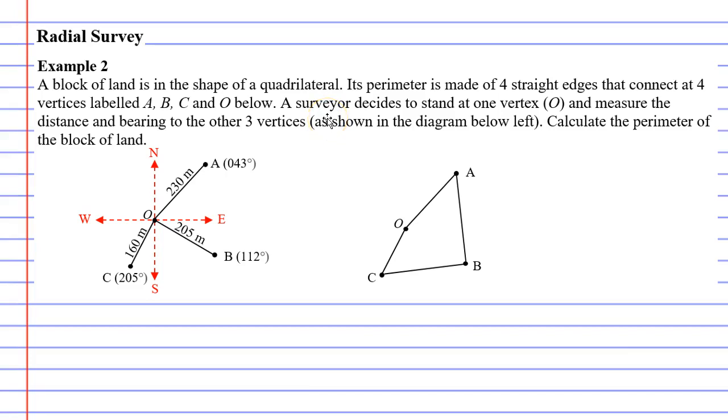Now a surveyor decides to stand at one vertex O. If we look on the right side, these are basically the same diagrams. The one on the left shows what the surveyor has measured. The surveyor stood here and measured the distance and bearing to the other three vertices. The surveyor measured the bearing from O to B at 112 degrees at a distance of 205 meters. They measured another distance to A which was 230 meters with the bearing there as well, and then they measured the distance to C and also put the bearing down.